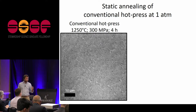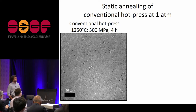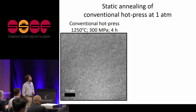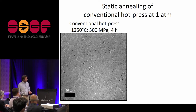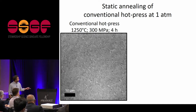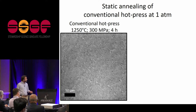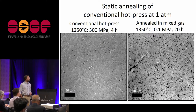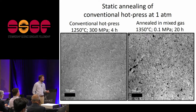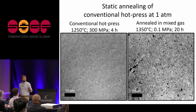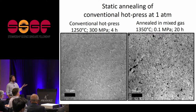To understand grain growth in these materials — because ultimately we want to understand what controls grain size in the mantle to understand flow — we did static annealing experiments on both conventionally and evacuated hot-pressed material. The micrograph on the left shows the conventionally hot-pressed olivine aggregate: a uniform fine-grain material with some small porosity. When annealed at one atmosphere, the trapped porosity expands and there is almost no grain growth, because the stored porosity is pinning the grain boundary migration.